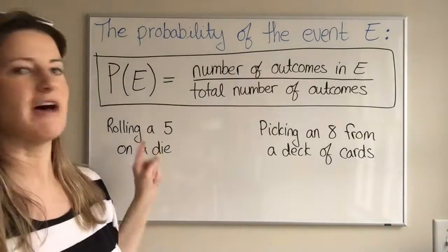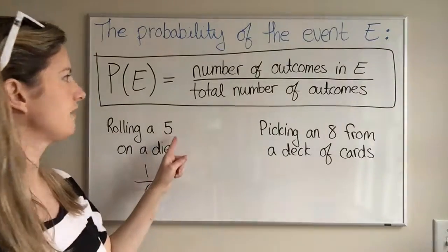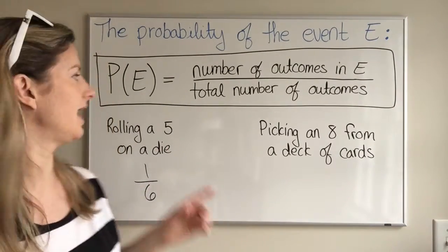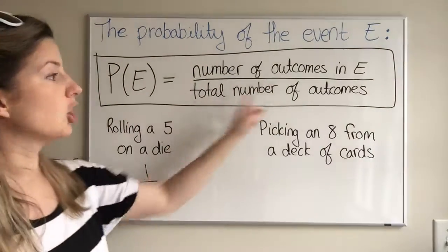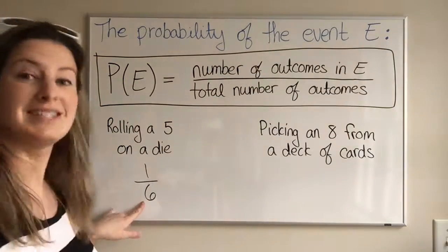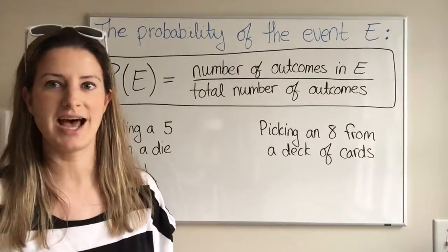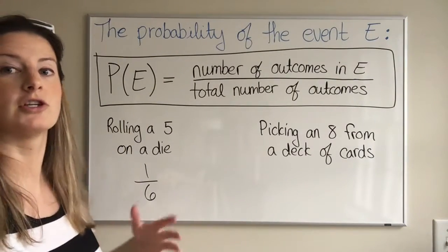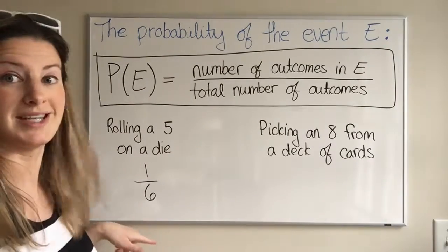Number of outcomes in E—the event that you want is rolling a 5. There's only one way that's going to happen. There's only one 5 on that die, so the number of outcomes in E is 1. The total number of outcomes is 6 because there are 6 sides to the die. So there's 1 that will work and 5 others that won't, for a total of 6. The probability is 1 over 6.